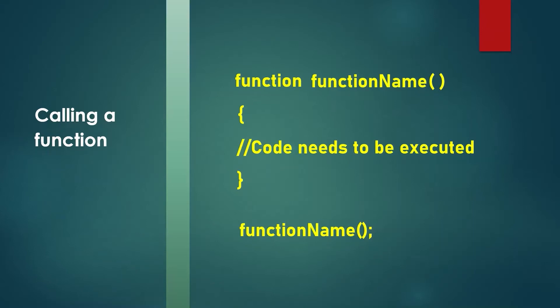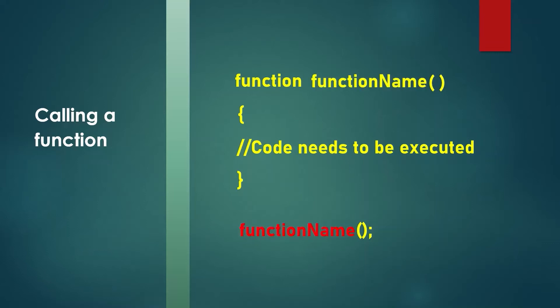Once a function is declared, you need to call it to execute the code inside. If you declare a function and mention code inside it, you invoke or call the function by using its name. So whatever function name you used to declare the function, to invoke it you put the name of the function followed by parentheses — in this way you can run the code inside the function.